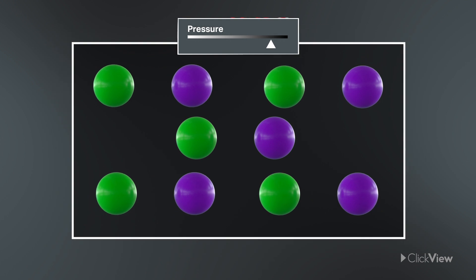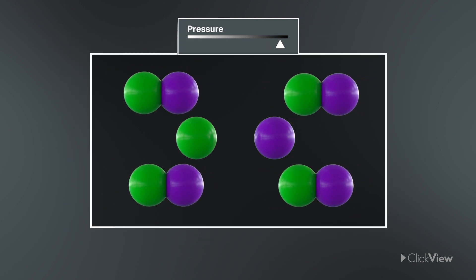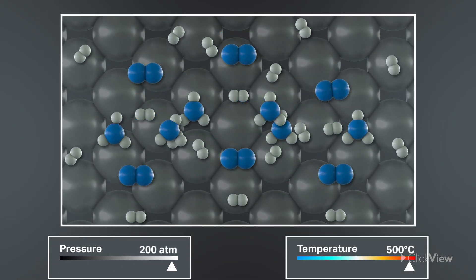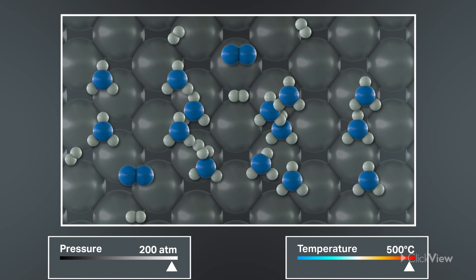Increasing the pressure on a system at equilibrium favors the reaction that produces fewer molecules. So in this case, applying a few hundred atmospheres of pressure favors the forward reaction. With the catalyst speeding things up, the pressure can help keep the ammonia together until it's cooled down and removed as a liquid.